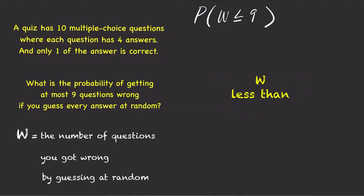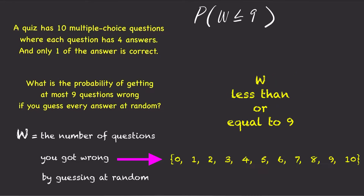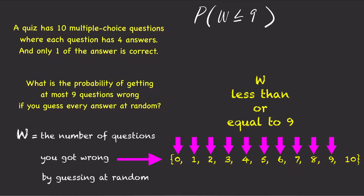w less than or equal to 9 means w could be equal to 9, 8, 7, 6, and all the way down to w equals 0. That's a very large number of cases to consider. Using the complement rule here would be much easier and much quicker.